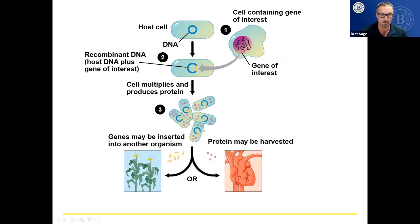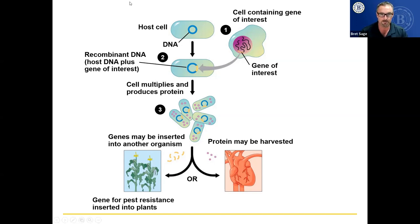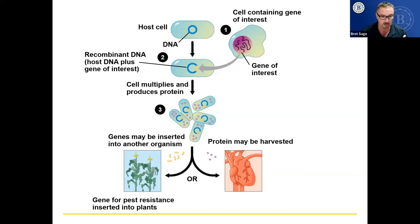There are two possible outcomes. You can either take the genes reproduced in these bacteria and insert them into a plant — for example, a gene for pest resistance inserted into plants. Now, Roundup, which is an anti-weed product used for years, is now under a class action lawsuit because people using it long-term have been getting cancer.